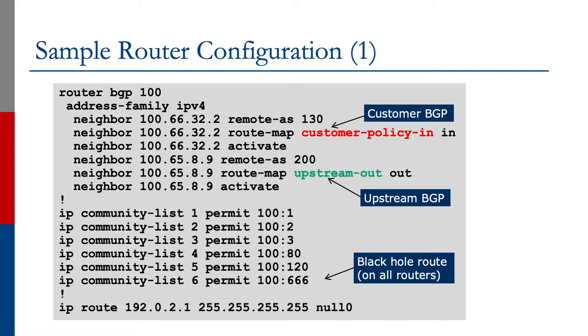As usual, we create community lists to easily match different communities attached to any advertisement coming towards us. Community list 1 matches 100:1, community list 2 matches 100:2, all the way to community list 6 which is the blackhole route and matches 100:666. We then create a static route to 192.0.2.1 pointing to null 0 — this is convention.